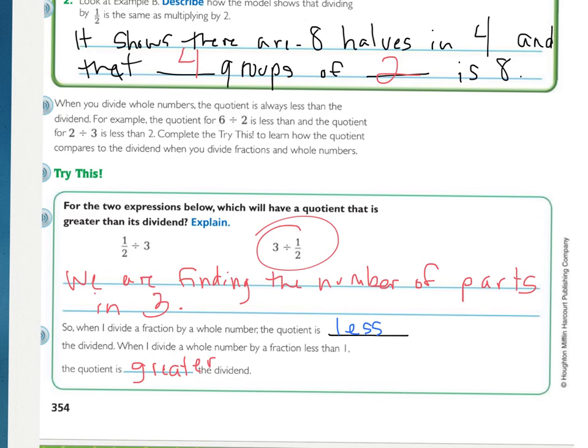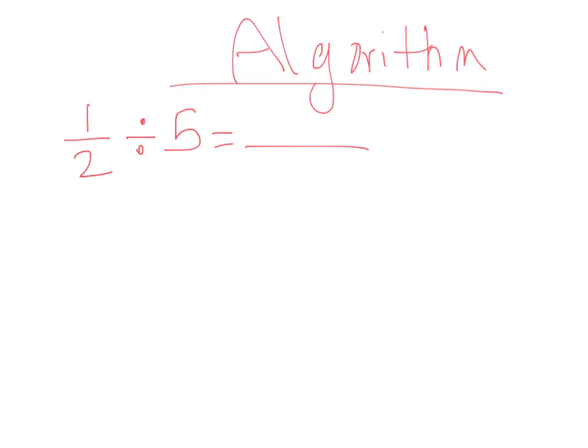And that leads us into back, when you start with a fraction, your answer, the quotient, will be less than what you start with. But when you start with a whole number, then your answer will be, or your quotient, will be greater than your first number. Alright, so we've kind of hinted at it, and we've talked it through a little bit, but here's the algorithm on how to divide fractions.